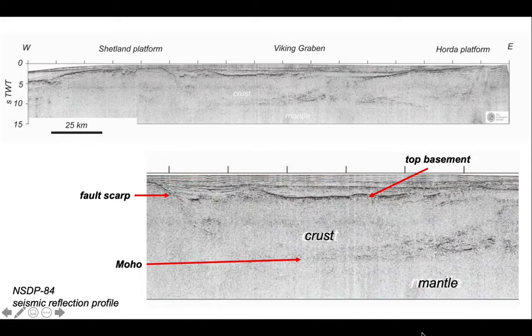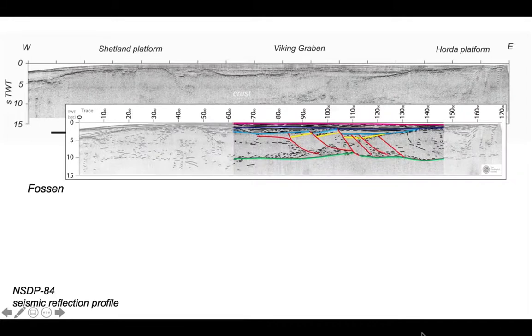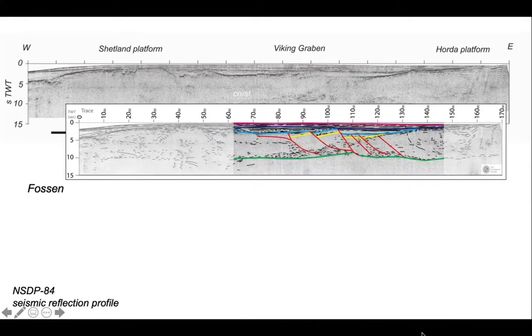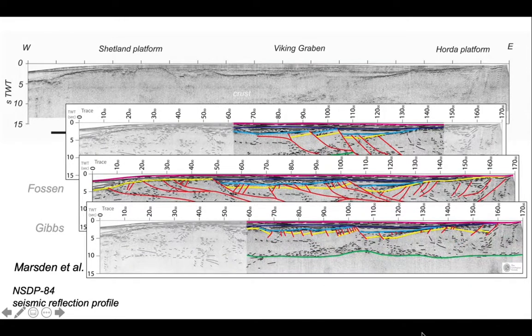We can relate the basins in the shallow part of this profile to the crustal thickness across the region. A number of different attempts have been made to interpret these profiles. Here they come: here's one by Bosson, here's another example by Gibbs, here's another by Marsden et al. They all show different geometries, from fully linked faults in some of those earlier ones down to isolated faults disappearing downwards into a creeping lower crust in the Marsden et al example.